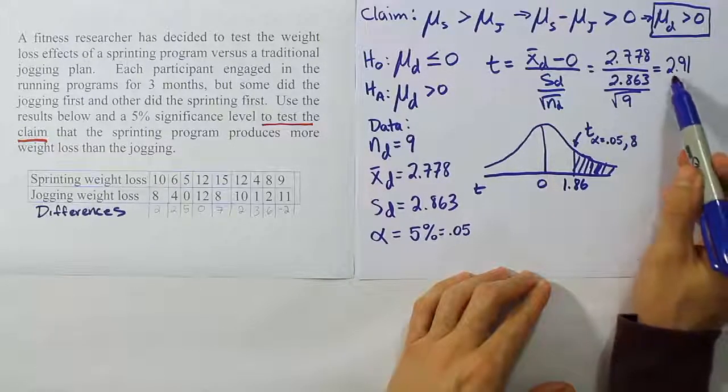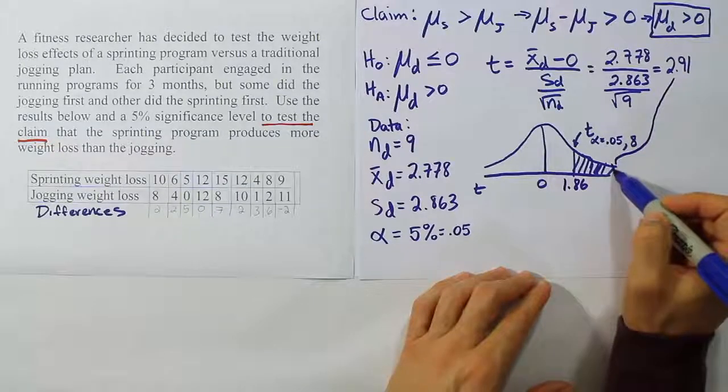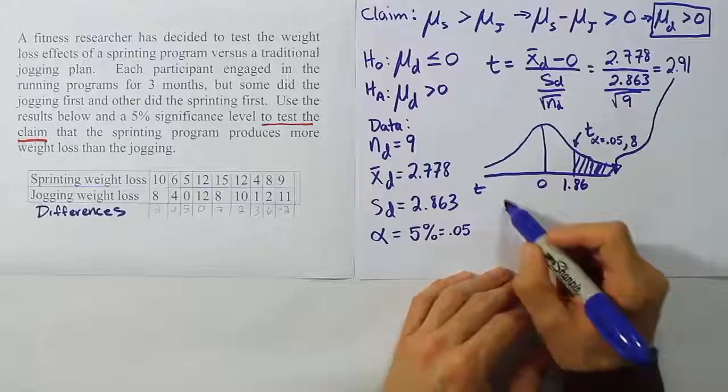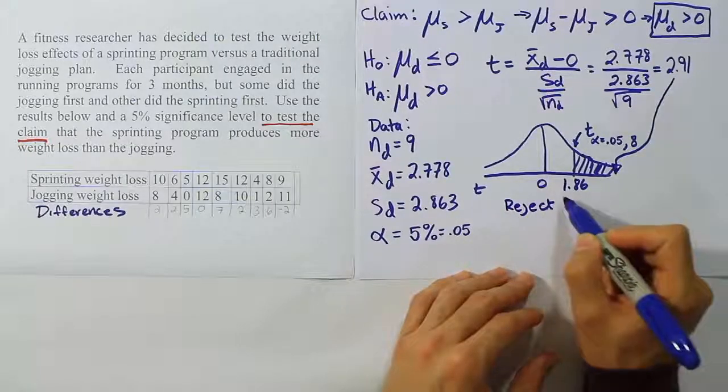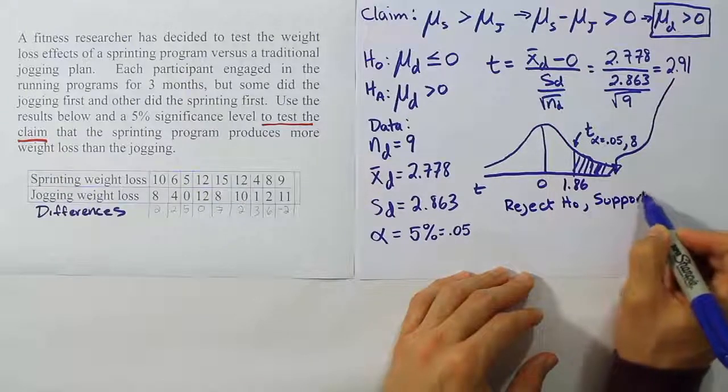Now we're going to place our test statistic on the same curve. And you see that 2.91 definitely lands here, and that would be in the rejection region. So because of that, we're going to decide that we are going to reject H0, and therefore support HA.